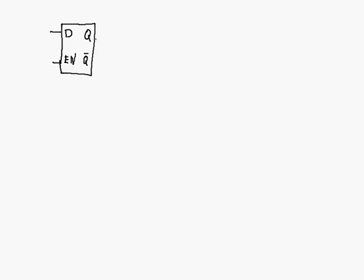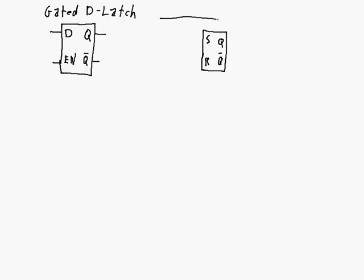What I'm drawing here is the block diagram for a gated D-latch. It's got a D-input, an enable input, and a Q and Q-bar output. Now if we were to break this thing open, what we would find on the inside — one way we could implement it — is with an SR-latch. This is one possible way we could implement this gated D-latch, with an SR-latch providing our Q and Q-bar inside.